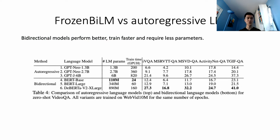Next, we show the superior efficiency of our bidirectional framework compared to its autoregressive counterpart for zero-shot video QA, in terms of accuracy, training time, and number of parameters. Our comparison includes multiple popular bidirectional and autoregressive language models. We hypothesize that bidirectional language models perform well because they can be constrained by a suffix to the right of the masked token, which helps them know the conciseness of the visual question answering task. We find that removing this suffix leads to a considerable drop in performance.